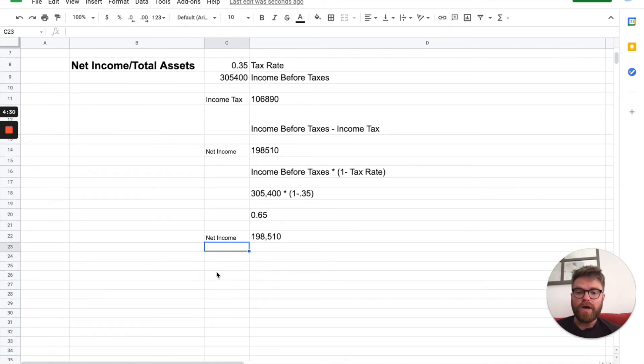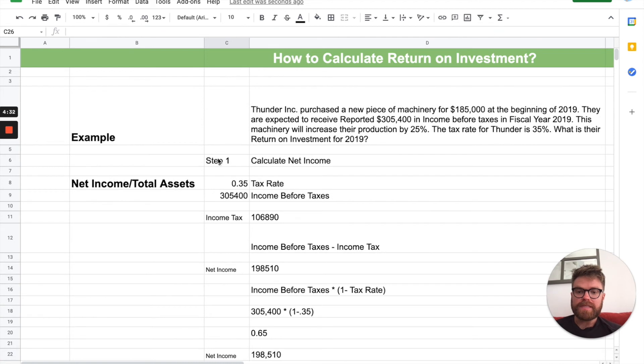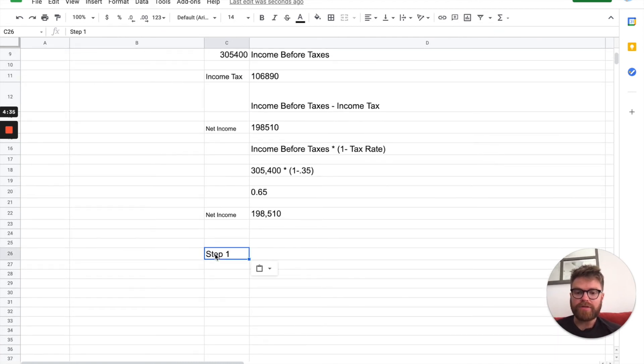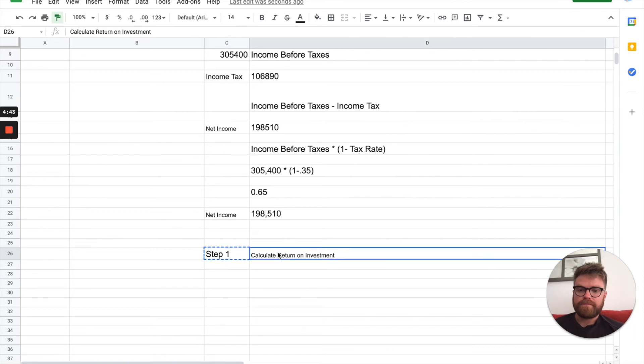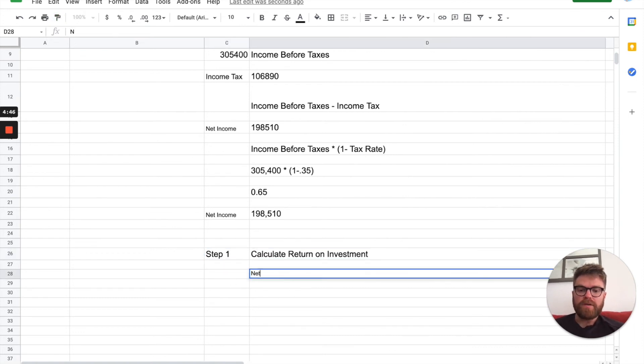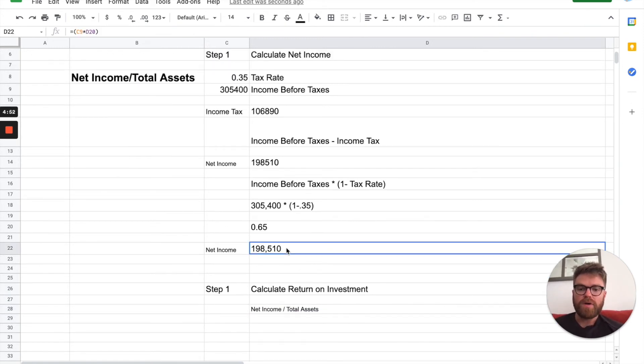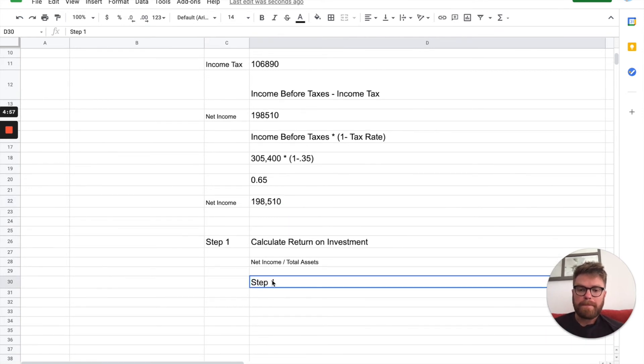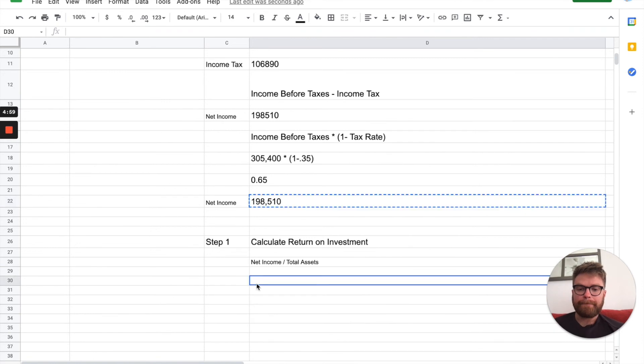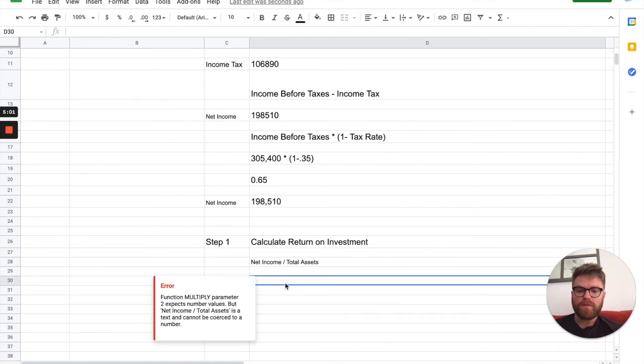Step 2 is you calculate return on investment. And again, that's going to be your net income divided by total assets. So, we already got our net income. We'll just move it down. $198,510.